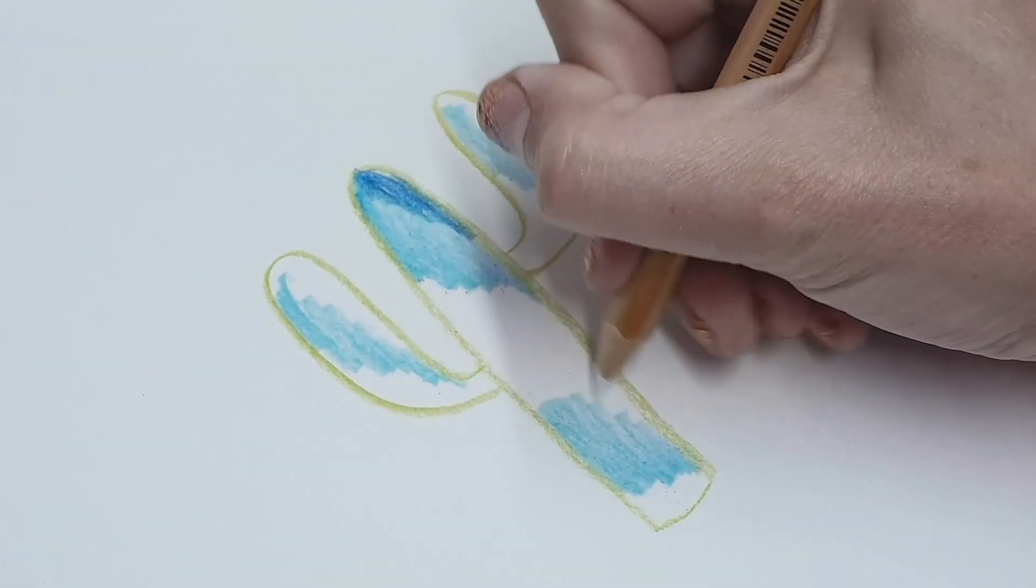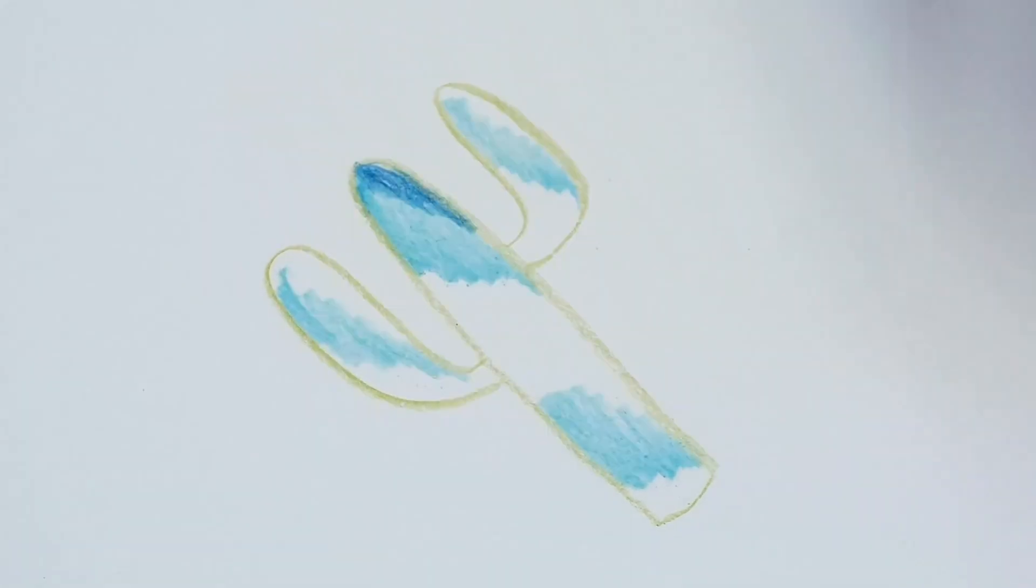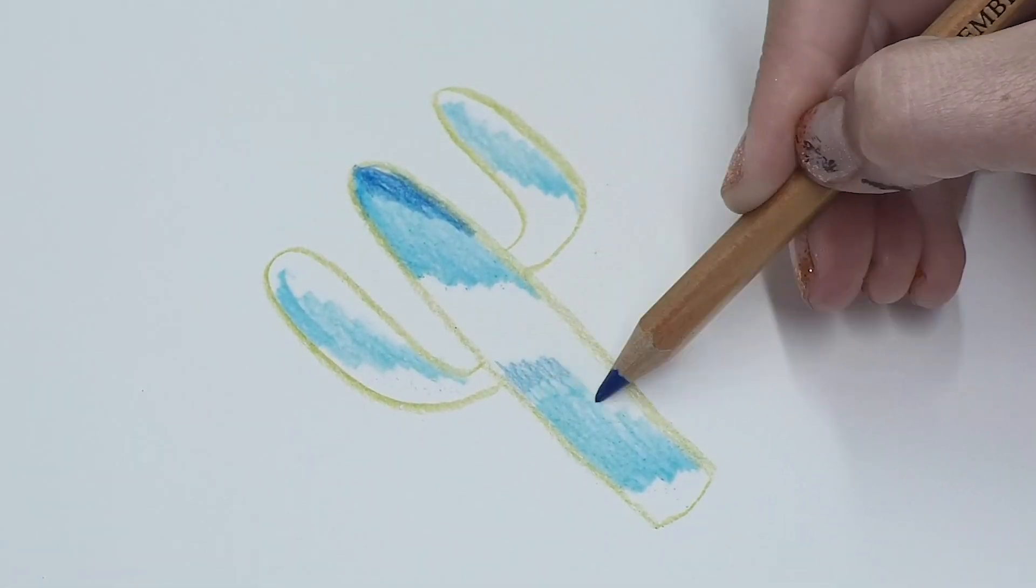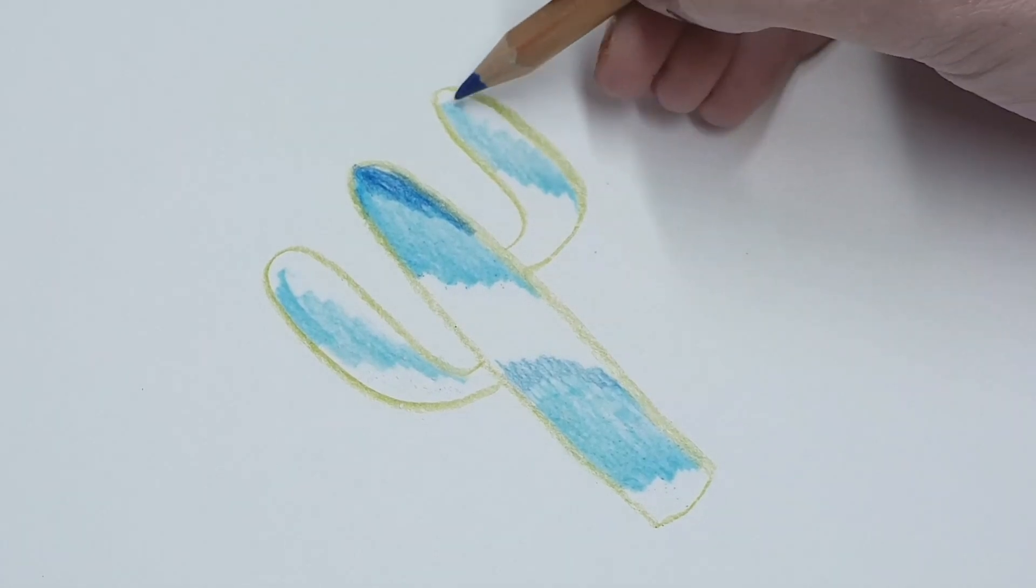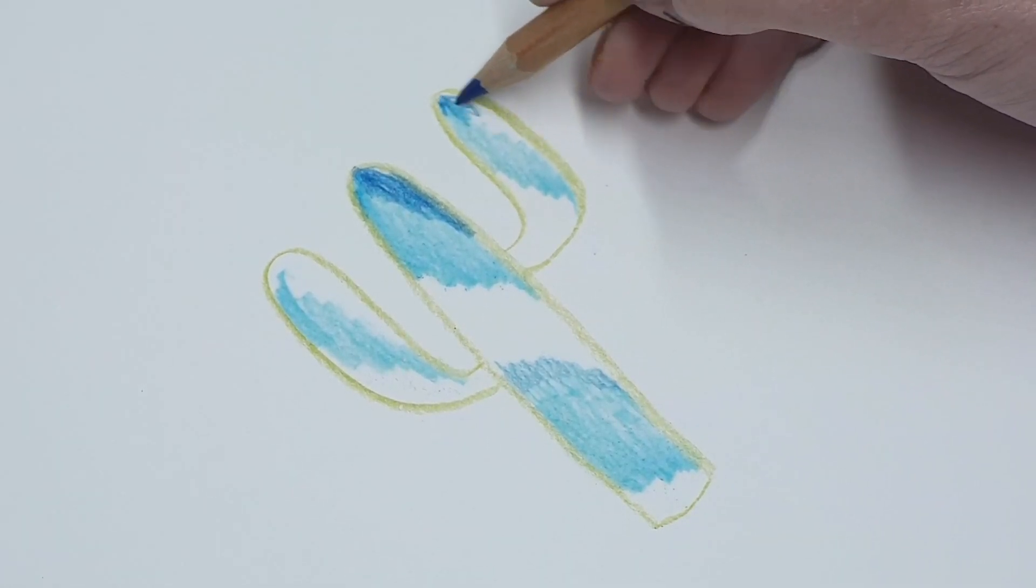I'm gonna add some white on this bottom part just to add a little bit more depth to the galaxy, but continue to add that dark blue and work your way around the cactus.